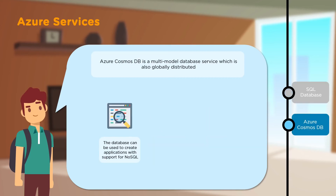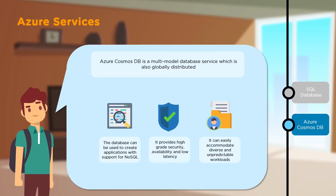Next, we have Azure Cosmos DB — a globally distributed multi-model database service. With this, you can create applications with support for NoSQL. It provides a high-grade security system, high availability and low latency. It is usually used in situations where you have a diverse and highly unpredictable workload.